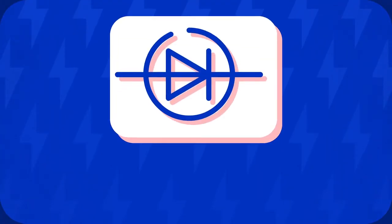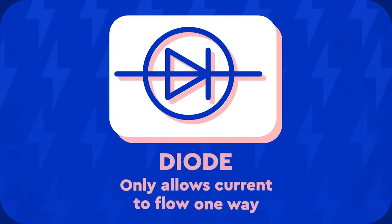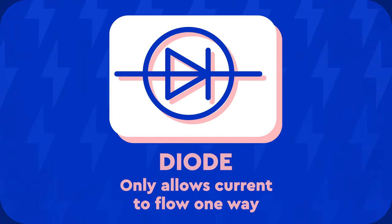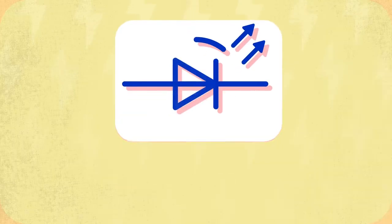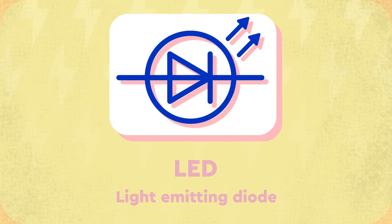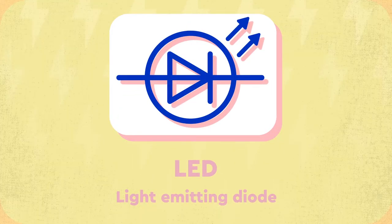This is a diode. It only allows current through in one direction. It is used to convert alternating current to direct current. An LED, or light emitting diode, is a diode that produces light.